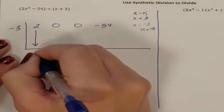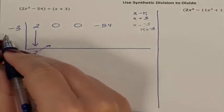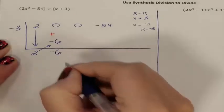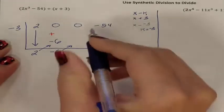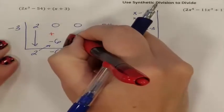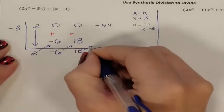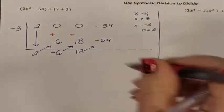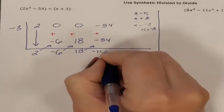I need to carry down the first term. You always multiply across. So negative 3 times 2 is a negative 6. We always add vertically. 0 plus negative 6 is a negative 6. We multiply across. So negative 3 times a negative 6 is a positive 18. We add vertically. 0 plus 18 is 18. We multiply across. Negative 3 times 18 is a negative 54. We add vertically. So negative 54 plus a negative 54 is a negative 108.